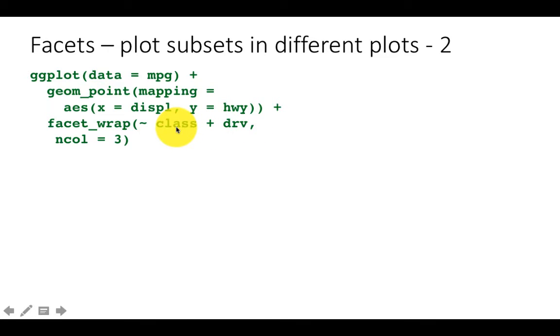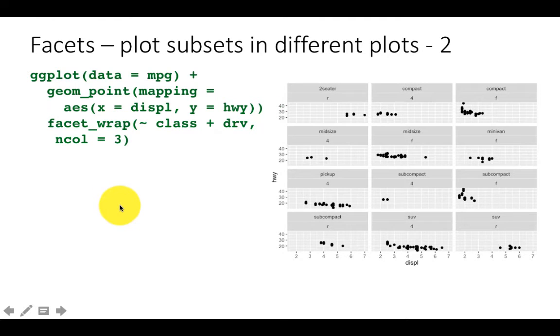So class has a certain number of possible combinations, drive has its own possible combination which is four wheel drive, front wheel drive, rear wheel drive. So what we are saying is for every possible combination of class and drive, show me a different facet. So that is what you get.